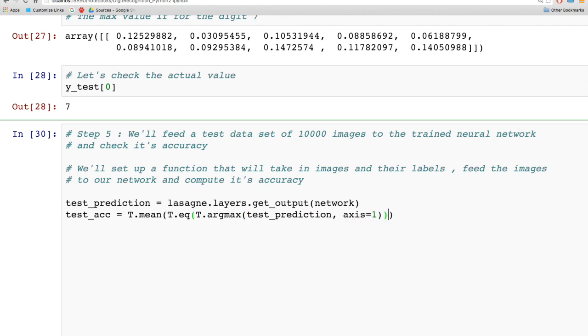T.argmax of test_prediction tells us the index of the max value in the predicted array. This is compared with the actual label value in target_var. T.mean gives us the accuracy.